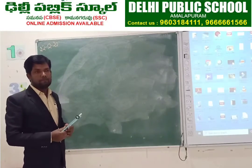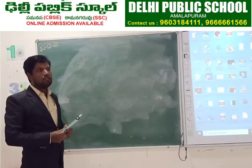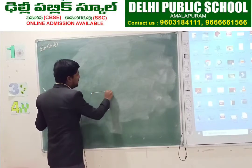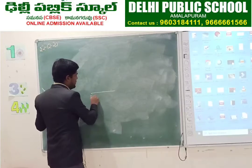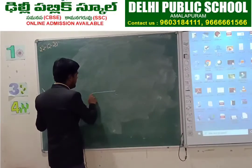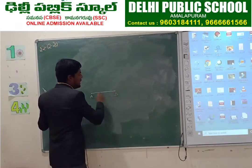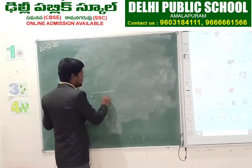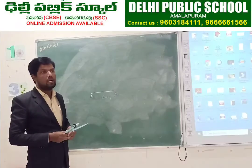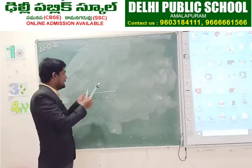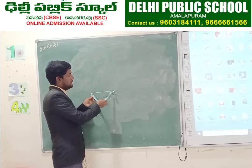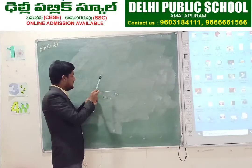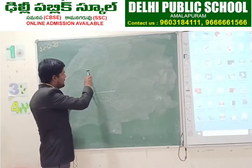For that, first thing we have to do is take a line AB with any centimetre. Here I took approximately 6 centimetres. Then take the compass and measure this line A to B exactly. With the same measurement, put a pointer on A and draw an arc.